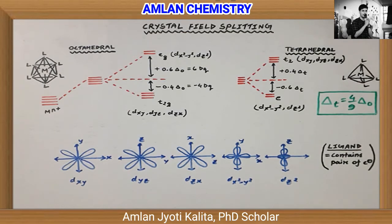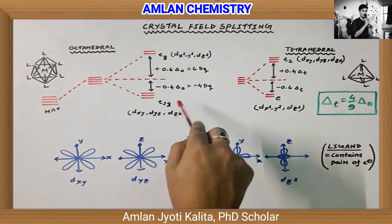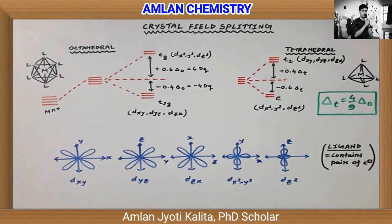The G in T2G represents gerade, a symmetry operation present in octahedral complexes but not in tetrahedral. I'll explain this in more detail in a different video later.